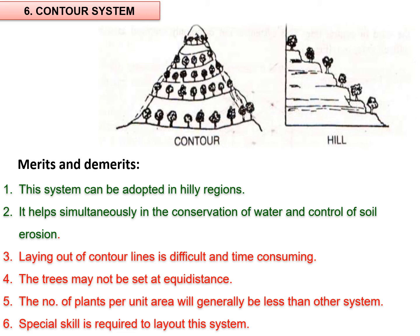A few main advantages of the contour system: it is suitable for hilly areas such as those growing cocoa and others, and it helps simultaneously in conservation of water and control of soil erosion. The limitations include: laying out of the contour line is difficult and time-consuming, trees may not be set at equal distances since placement depends on suitable site availability, the number of plants per unit area will generally be less than other systems, and special skill is needed to follow the layout.